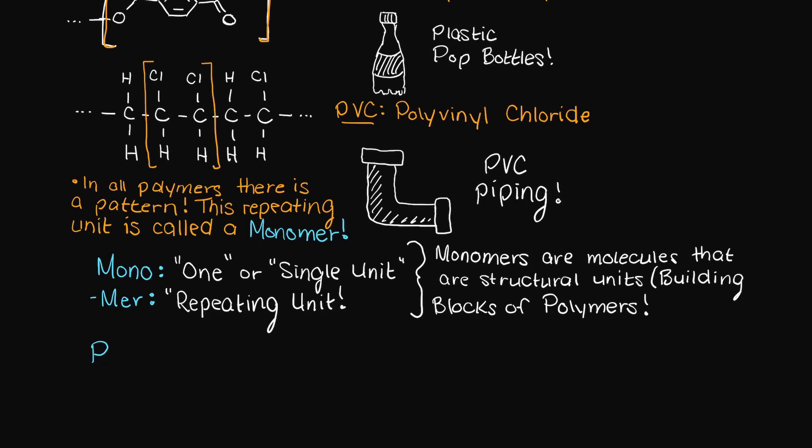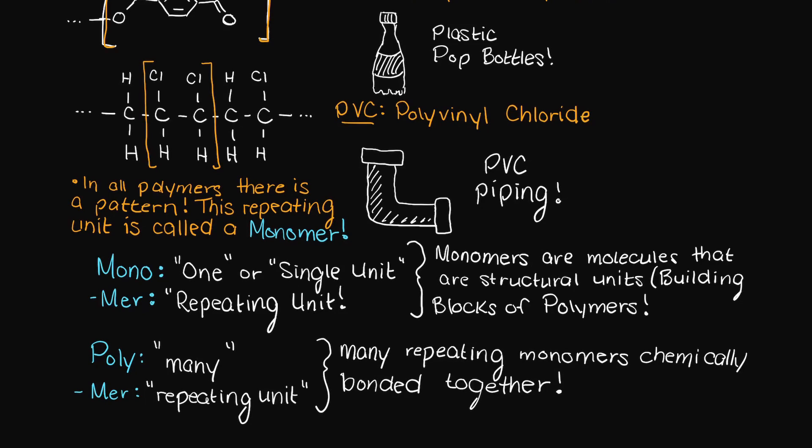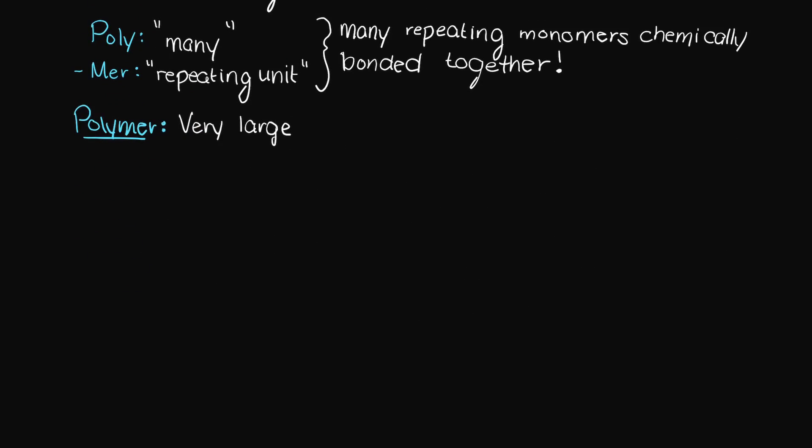Similarly, poly means many and again mer means repeating unit. And that's all a polymer is, it is just many repeating monomers connected together. Therefore, polymers are just very large molecules composed of these repeating units.